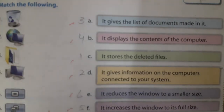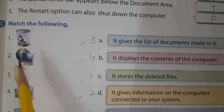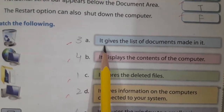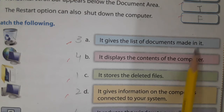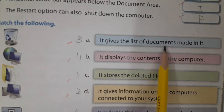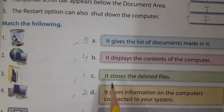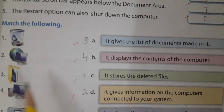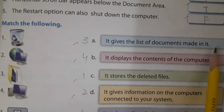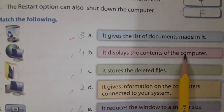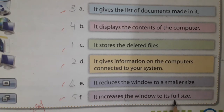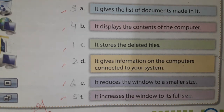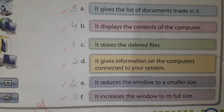Next, part C — match the following. You can see the pictures and match them to the statements. Number one: the recycle bin stores the deleted files. Number two: it gives information on the computers connected to your system. Number three: it gives the list of documents made in it. Number four: it displays the contents of the computer. Number five: this button increases the window to its full size. Number six: it reduces the window to a smaller size. Students, do this exercise in your books and also learn it — take care.